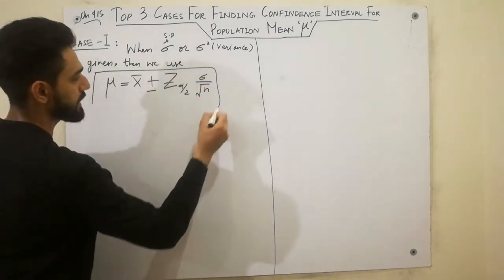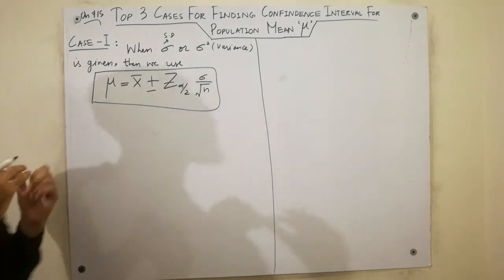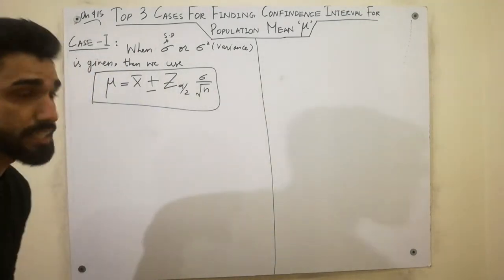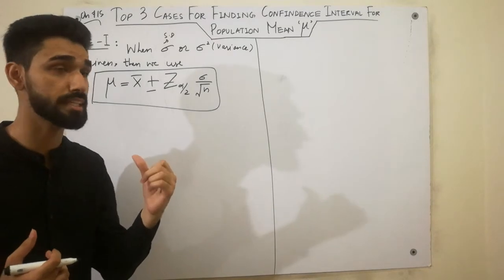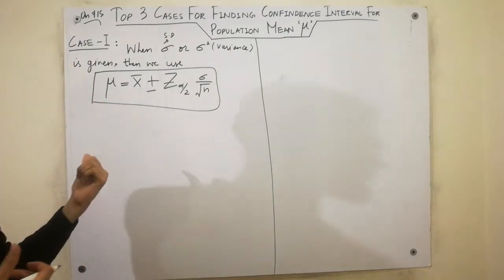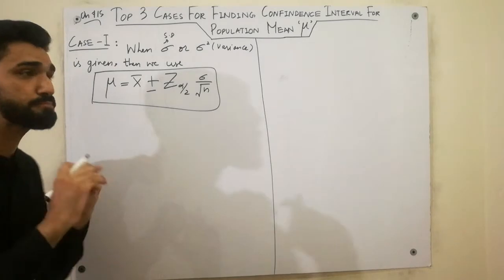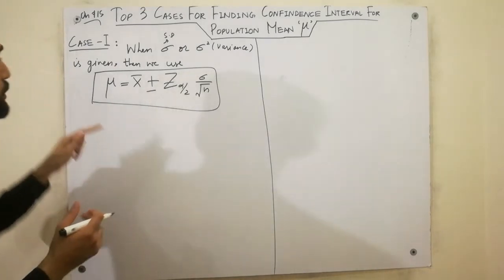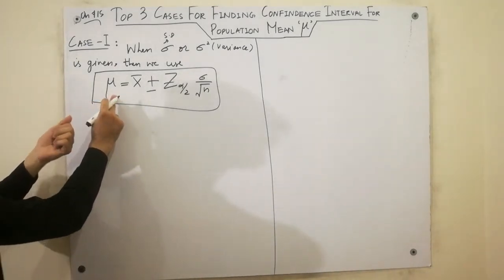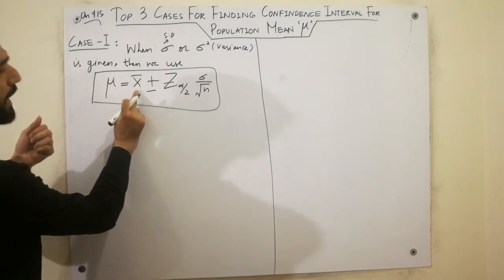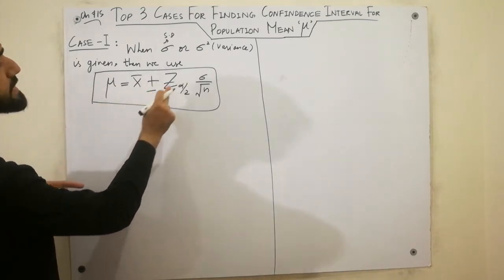Here Sigma is the standard deviation divided by the square root of n. This is the standard deviation for the whole population. For the confidence interval for population mean, we use X bar plus minus Z alpha by 2 times Sigma over root n.